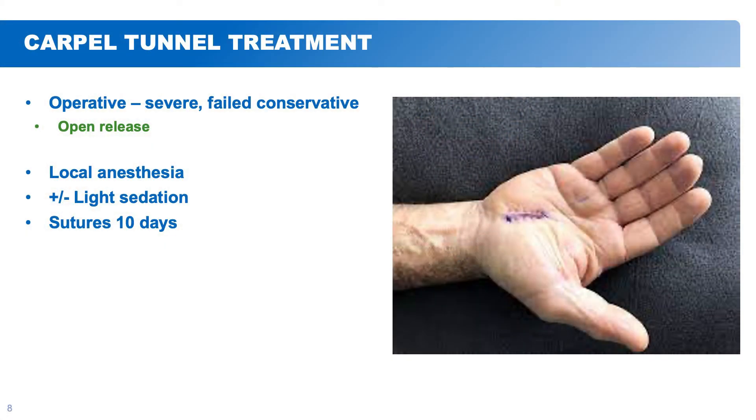Ultimately, however, if all non-operative measures fail, if you have severe carpal tunnel on electrodiagnostic studies, or if there's muscle wasting where the thumb muscles start to decrease in size, we would discuss surgery. The operation is called an open carpal tunnel release. A lot of times we can do this under local anesthesia — you receive numbing medication only and are awake — or with light sedation if preferred. Typically, sutures are kept in for 7 to 14 days, on average about 10 days, until the incision heals.